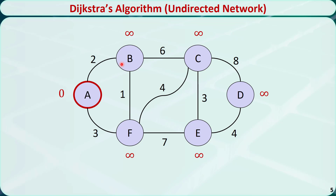The distance from A to B is 0 plus 2, which equals 2 — smaller than positive infinity — so we replace it with 2. The distance from A to F is 0 plus 3, which equals 3 — smaller than positive infinity — so we replace it with 3. Out of all the unvisited nodes, node B has the shortest distance, so we move from A to B.